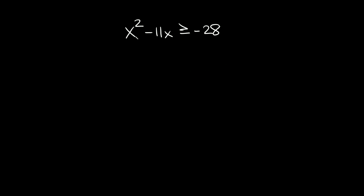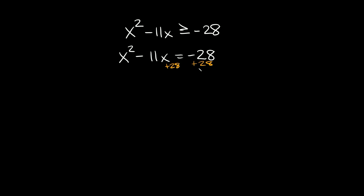Let's try one more. We have x squared minus 11x is greater than or equal to negative 28. The first thing is turning this into an equal sign and solving for x. We add 28 to both sides, leaving us with x squared minus 11x plus 28 is equal to 0.